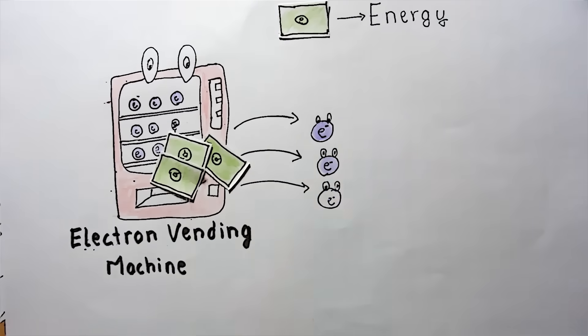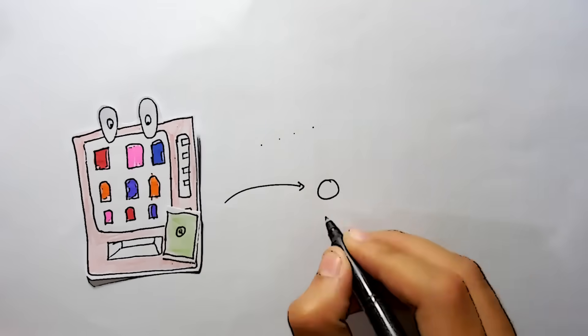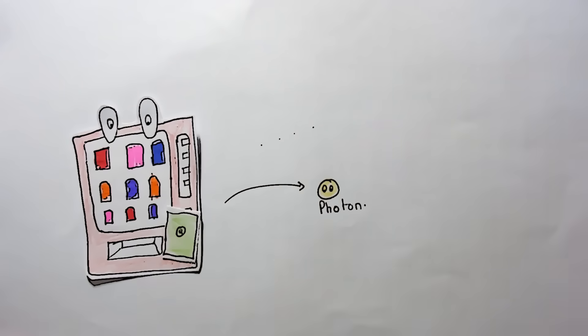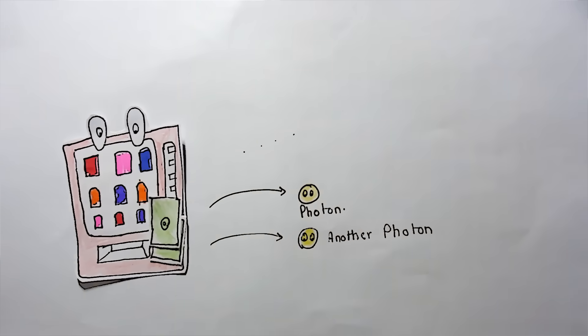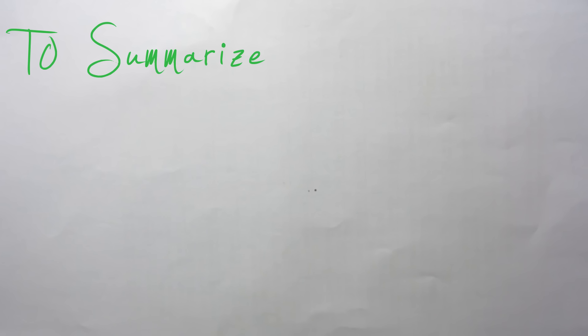You can go, for example, to an electron machine, pay some money, and get an electron. And then you can go to a photon machine, pay some other amount of money, and get a photon. There are 18 such machines that we know of.